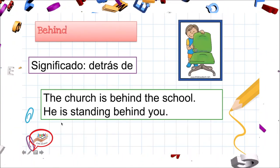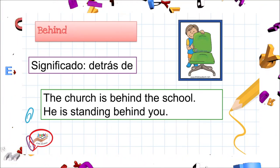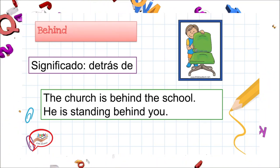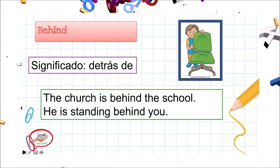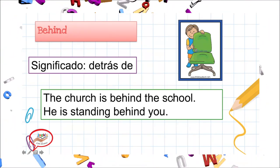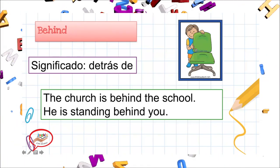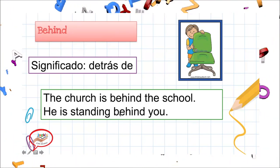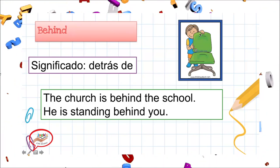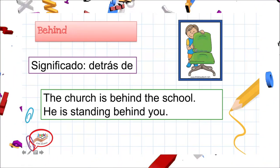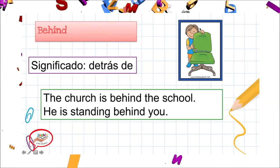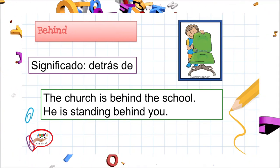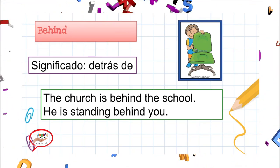Next one: 'behind'. Su significado es 'detrás de'. Siempre que miramos la palabra 'behind', sabemos que es algo que está detrás. Let's see the examples: 'The church is behind the school' — la iglesia está detrás de la escuela. 'He is standing behind you' — él está parado detrás de ti. Tenemos el boy y la chair — el boy está behind the chair. The boy is behind the chair, porque 'behind' nos indica que el niño está detrás de la silla.